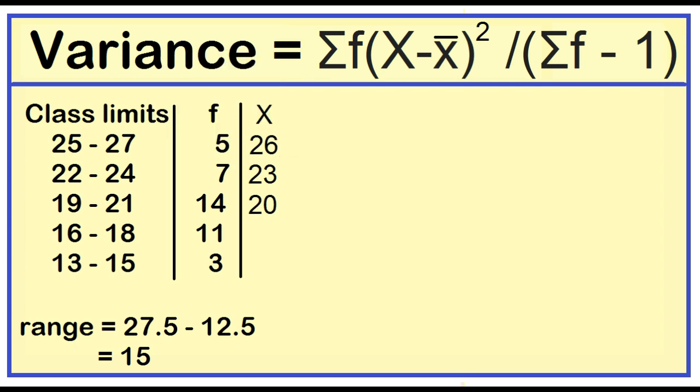Next is 20, 17, and 14. Let's add another column for the product of the frequency and the class mark. 5 times 26 equals 130.